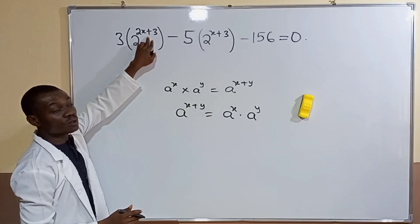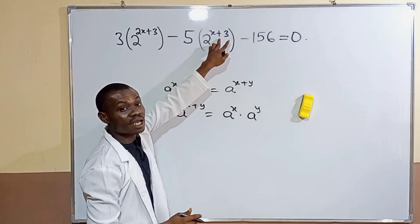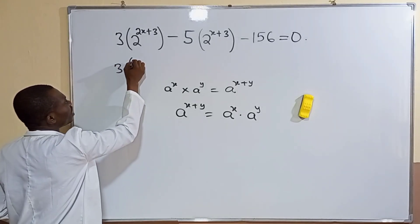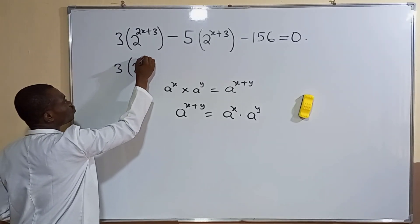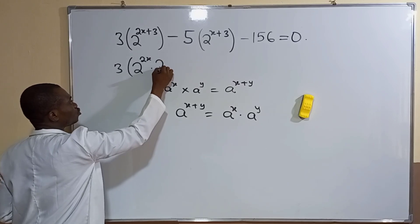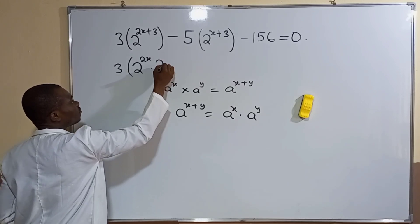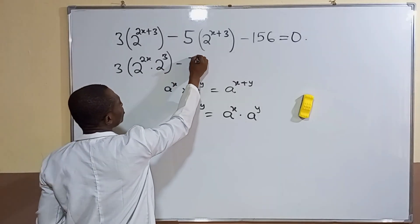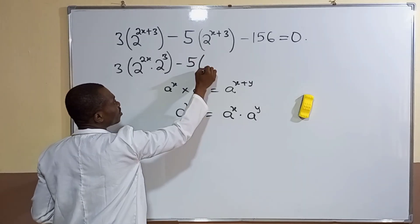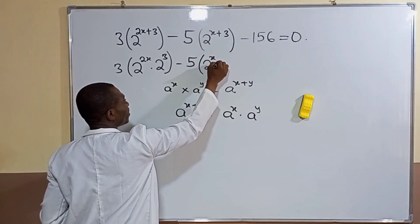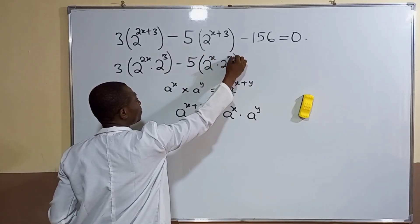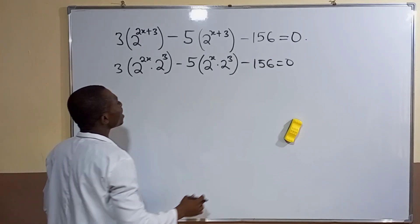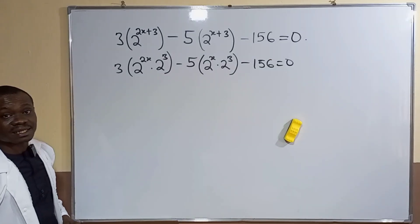Applying this rule, the first term gives us 3 times 2 to the power of 2x times 2 to the power of 3. For the second term, we apply the same rule to get 5 times 2 to the power of x times 2 to the power of 3.